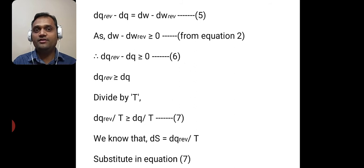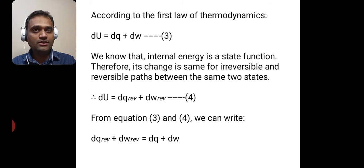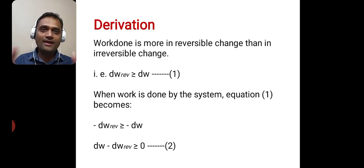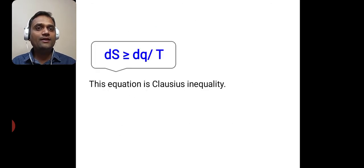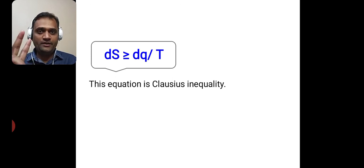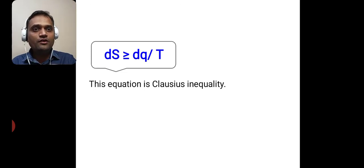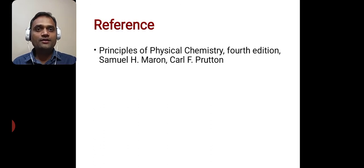So we have just derived the Clausius inequality. To derive it, we started with the work done in reversible and irreversible processes, with the observation that work done is more in a reversible process than in an irreversible change, and finally arrived at ds is greater than or equal to dq upon T. Note that two things are different: the Clausius inequality is ds is greater than or equal to dq upon T, while the thermodynamic definition of entropy is ds is equal to dq reversible upon T. Remember the sign: ds is greater than or equal to dq upon T.